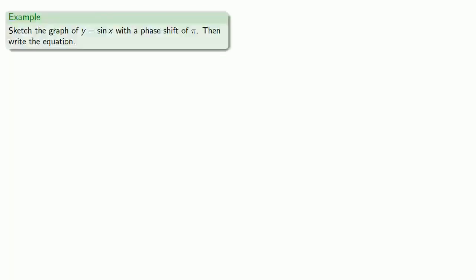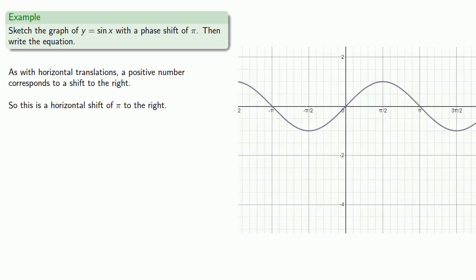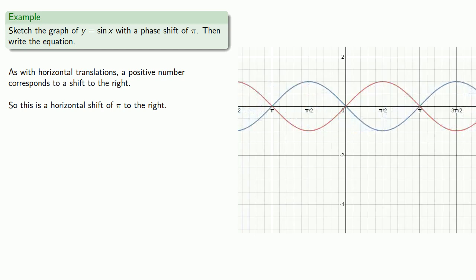For example, let's try to sketch the graph of y equals sine of x with a phase shift of pi, and then write the equation. Phase shift is just another word for horizontal translation. As with horizontal translations, a positive number corresponds to a shift to the right. So a phase shift of pi is a horizontal shift of pi to the right. We'll start with a graph of y equals sine of x and shift by pi units to the right.